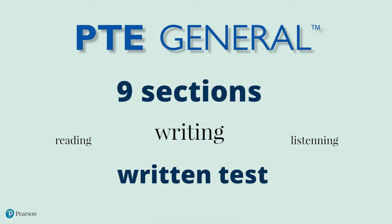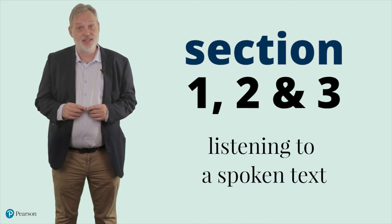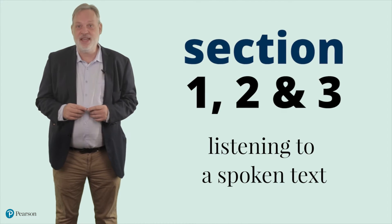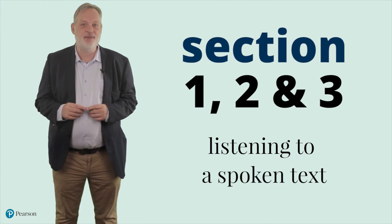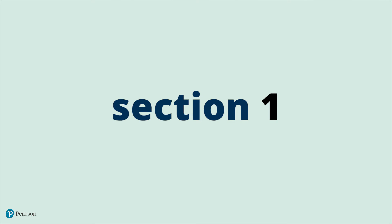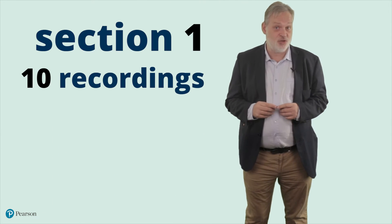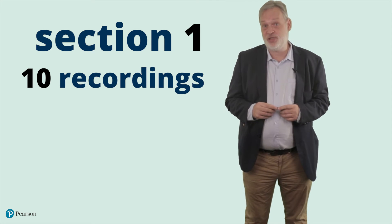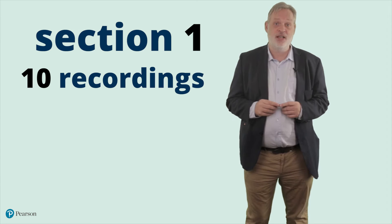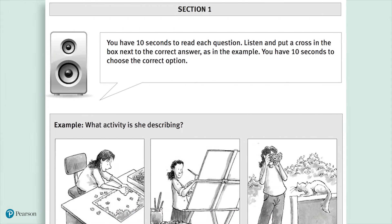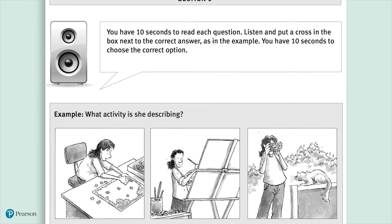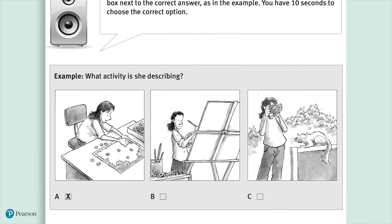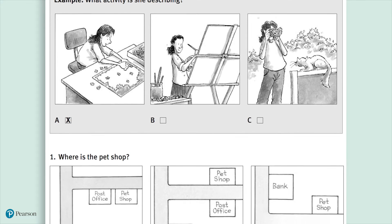Sections 1, 2 and 3 involve listening to a spoken text, but each section focuses on a different aspect of the skill. In Section 1, test takers listen once to ten short recordings and answer a single question for each by choosing one of three options — graphical or textual — that matches what is heard. This section assesses ability to understand the main detail in short spoken utterances.